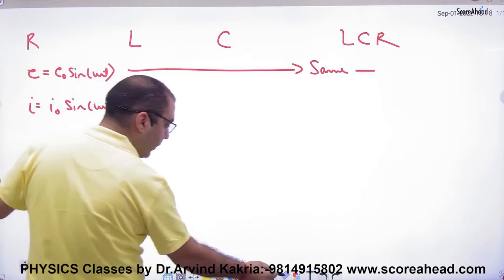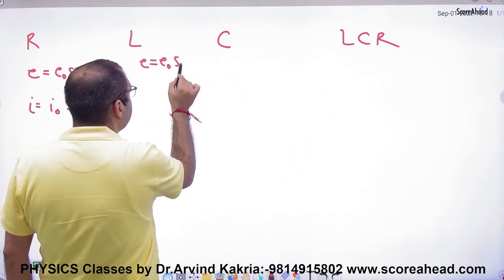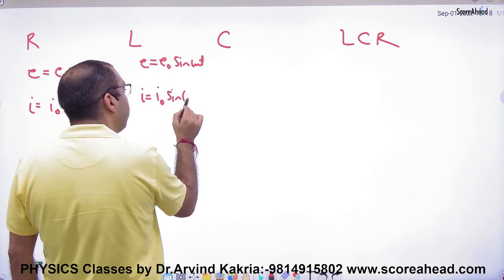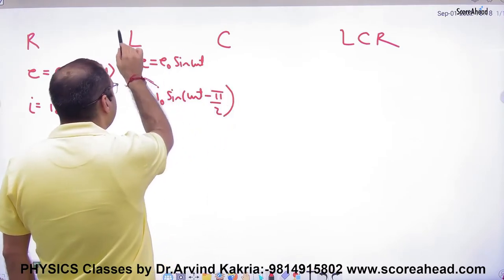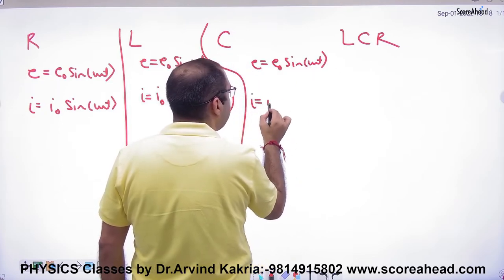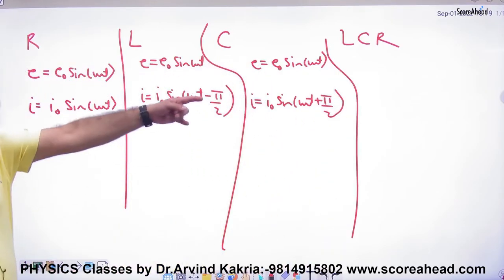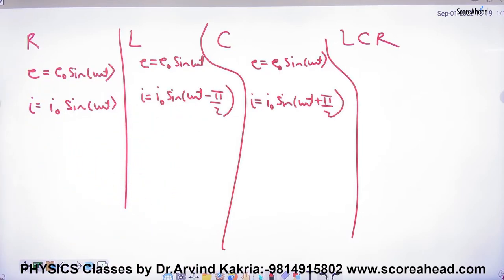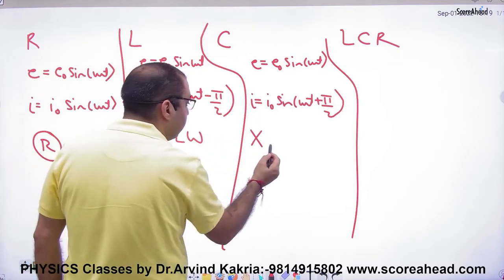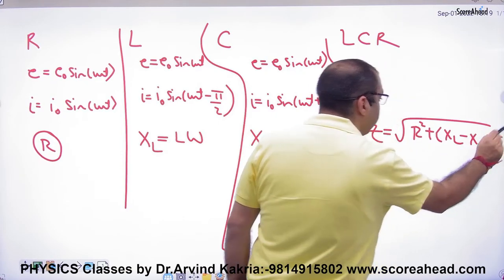For an inductor, the EMF equation is E = E₀ sin(ωt) and the current equation is I = I₀ sin(ωt − π/2) — current lags by π/2. For a capacitor, the current equation is I = I₀ sin(ωt + π/2) — current leads by π/2. The resistances are: R (resistance), XL = Lω (inductive reactance), XC = 1/Cω (capacitive reactance), and Z = √(R² + (XL − XC)²) (impedance).